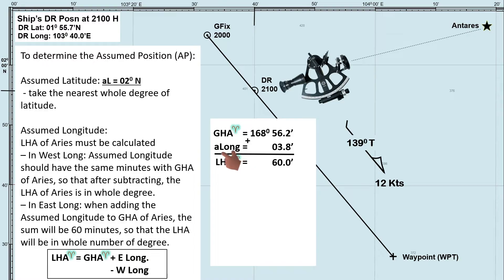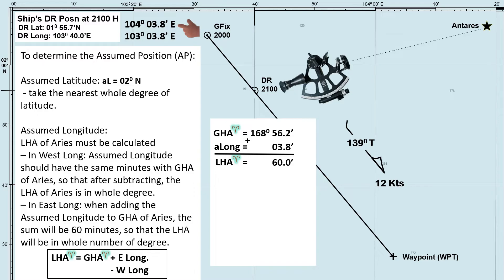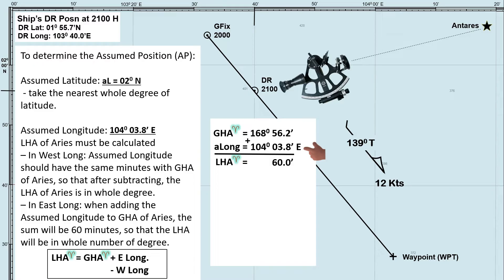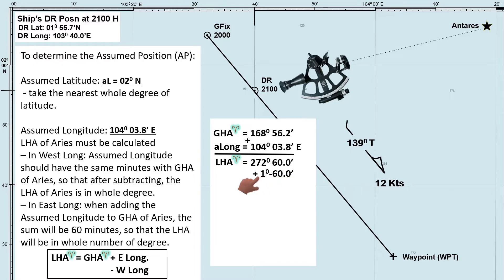Always remember that our assumed longitude should be nearest to our DR longitude. So we have two choices: 103 degrees 3.8 minutes east, and 104 degrees 3.8 minutes east. It is clear that the nearest is 104 degrees 3.8 minutes east. Now the sum of 168 and 104 degrees is 272 degrees. Since 60 minutes equals 1 degree, we subtract 60 minutes and add 1 degree to 272 degrees. Our LHA of Aries is 273 degrees, which is a whole number of degrees.